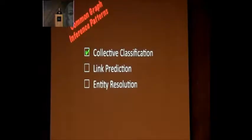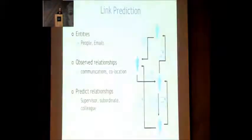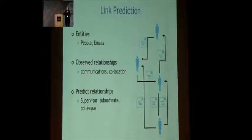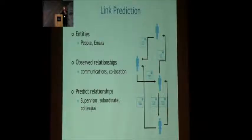The next one is link prediction — predicting edges in a graph. Consider the Enron dataset or any communication dataset where you have individuals, content, and observed relationships: who communicates with whom, who's co-located. You're trying to do a link prediction problem, but not just the classic link completion problem — you're trying to predict a different semantic link. Maybe what you're trying to predict is who's the supervisor, who's the subordinate, who are colleagues.